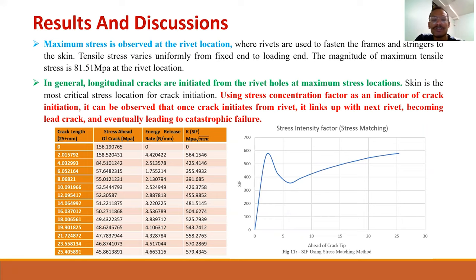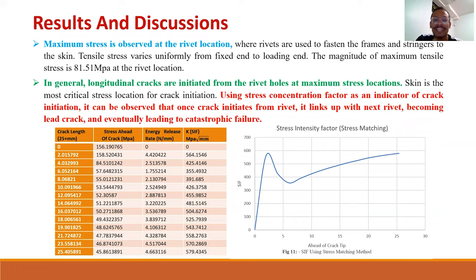In general, longitudinal cracks are initiated from the rivet holes at the maximum stress location. The skin is the most critical stress location for crack initiation. In this study, the stress concentration factor can be used as an indicator for crack initiation, which demonstrates that once cracks initiate from the rivets, they link up with adjacent rivets, eventually becoming a lead crack and resulting in catastrophic failure.